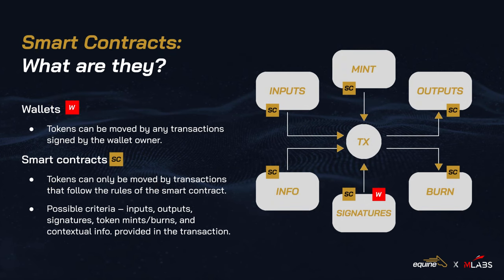Before we get into each of these stages of racing, let's take a quick detour to talk about smart contracts. Most of you may be familiar with how crypto wallets work — you can send your tokens to someone by signing and submitting a transaction to the blockchain. A transaction is a written statement that lists the tokens being spent, information provided as context, tokens being minted or burnt, outputs being sent out to recipients, and the required signatories of the transaction.